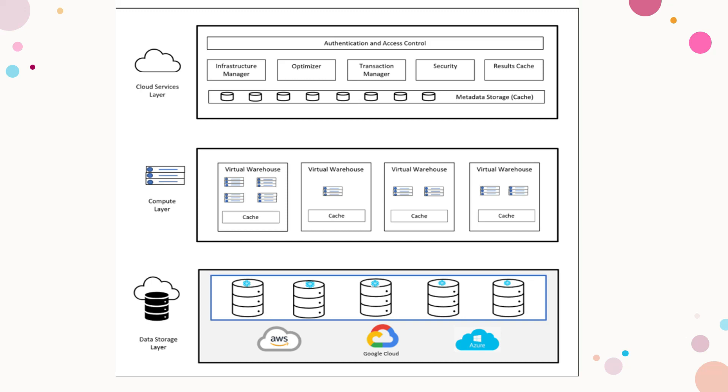Snowflake architecture has three separate layers. The bottom layer is the data storage layer, which is completely decoupled from compute. This storage layer is offered on all prominent cloud vendors and is where data is stored. The second layer is the compute layer — the virtual warehouse — responsible for processing. On top we have the cloud services layer, which is like the master brain of Snowflake. Services like infrastructure, optimizer, and transaction manager all operate at the cloud services level.